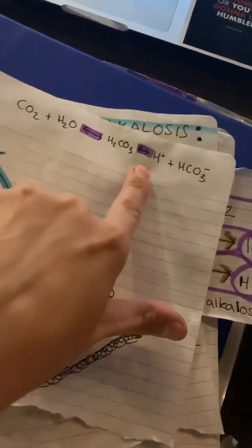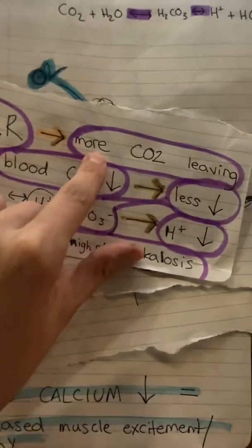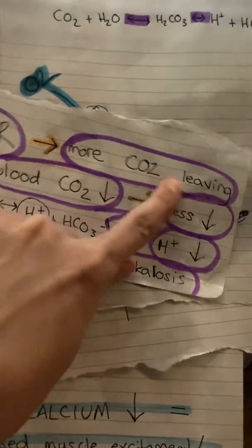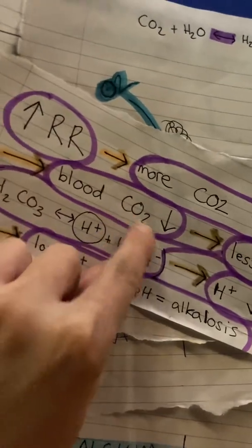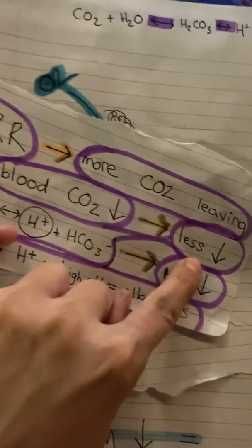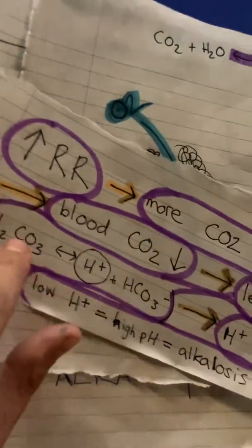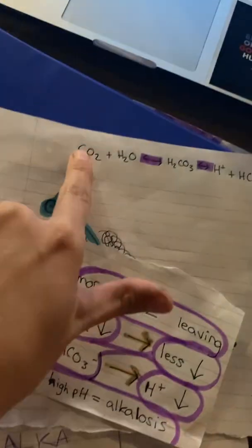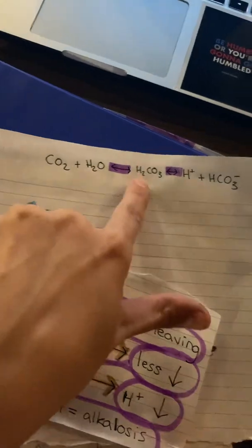So: high respiratory rate means more carbon dioxide is leaving the blood, which means blood carbon dioxide goes low. Higher respiratory rate → low blood carbon dioxide. And less blood carbon dioxide means less carbonic acid, which means less hydrogen. So now the hydrogen is low.